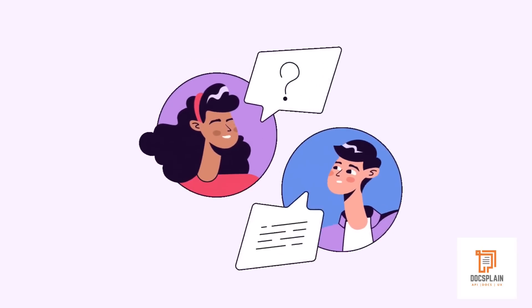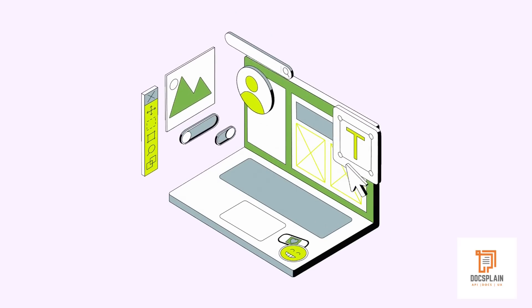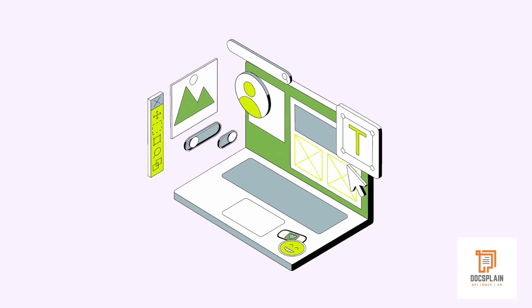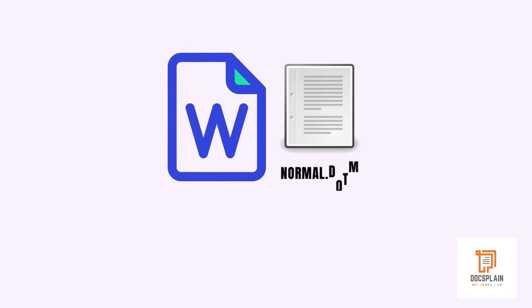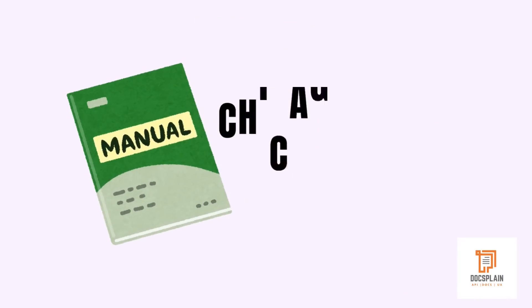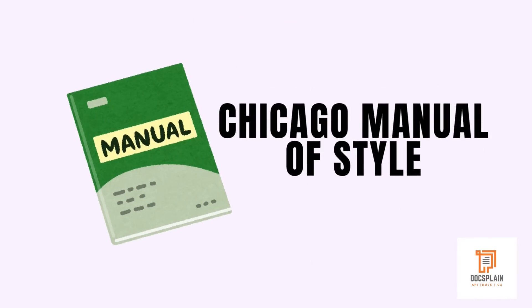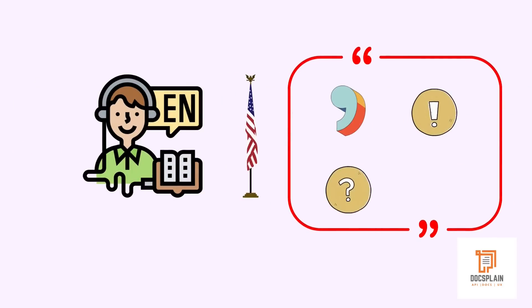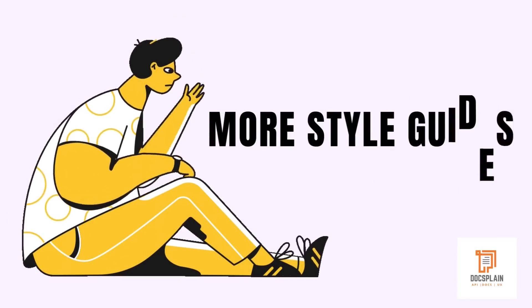At the time, the most they could ask was to set up their style templates in a word processor using DOTM or similar files. Though there was no standard writing style guide when the IT boom started, the industry went on to use the Chicago Manual of Style as a de facto for its comprehensive coverage of grammar and punctuation rules adhering to American English.